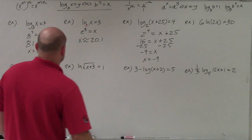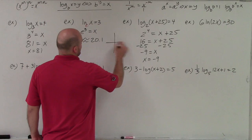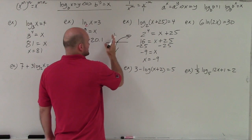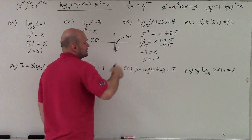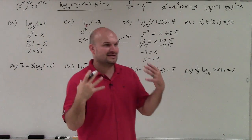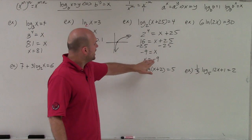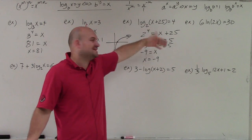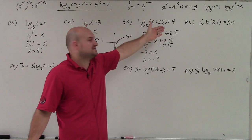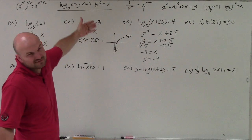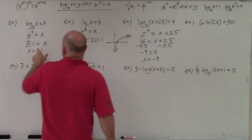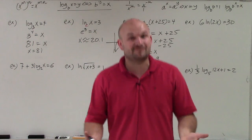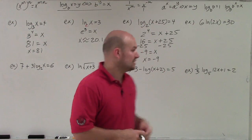We should always check for extraneous solutions. Looking at the graph of a logarithm, x values cannot be negative — we can't take the logarithm of a negative number. It gets scary when you see a negative solution, but if I plug negative 9 back in for x, negative 9 plus 25 is 16, so I'm still taking the logarithm of a positive number. As long as I'm not taking the logarithm of a negative number, there are no extraneous solutions.